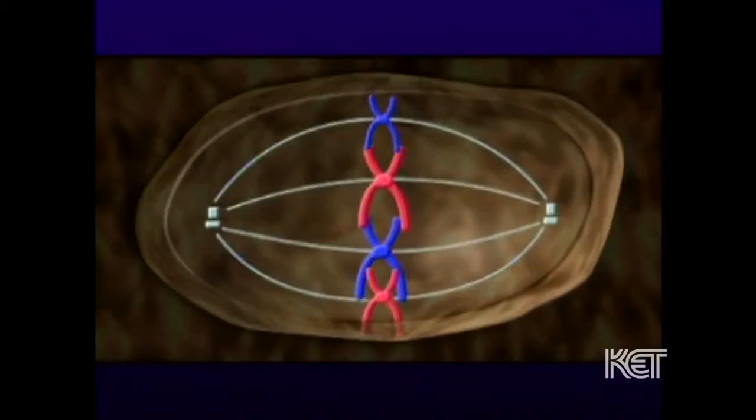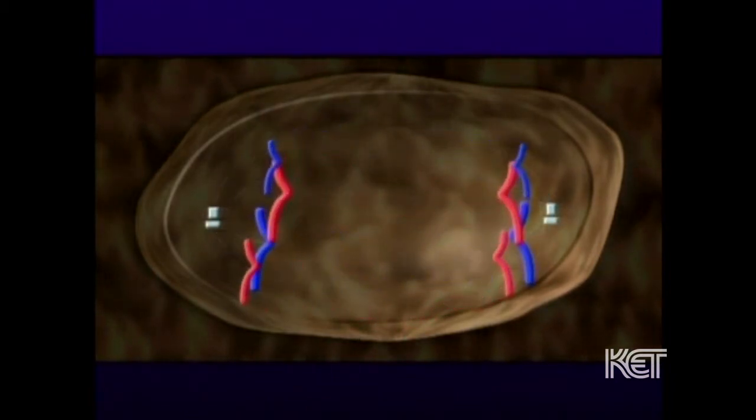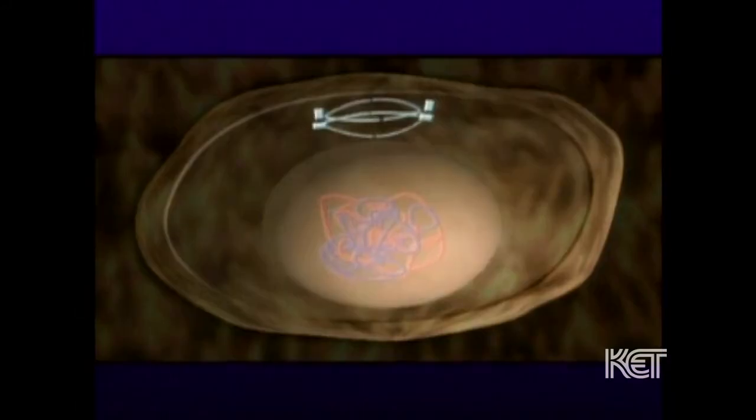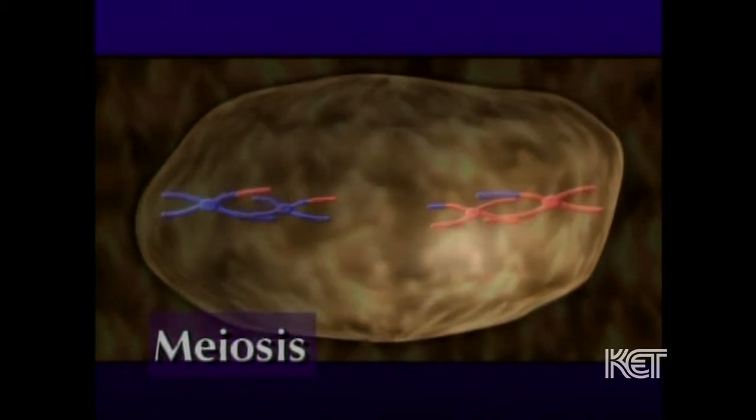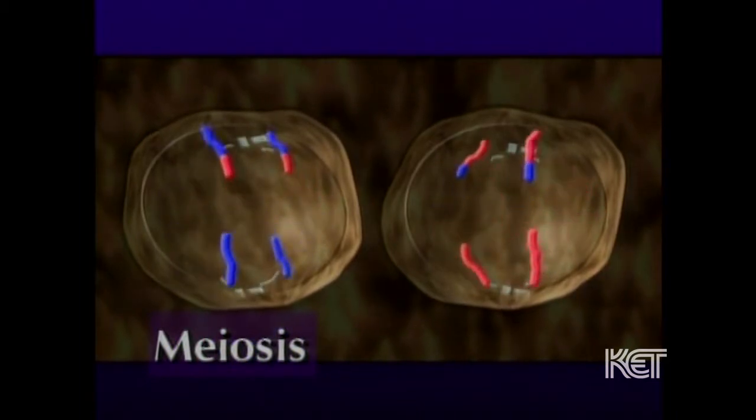So you now have two cells with the exact same genetic message — all the chromosomes are the same in the first and second cell. Meiosis is a process whereby you reduce the number of chromosomes in the cell, and this only occurs in sex cells. Because the sperm or egg cell will ultimately join with another to create a new organism, you only need half the number of chromosomes, so that the final combination gives you a full complement — not twice as many as you need.